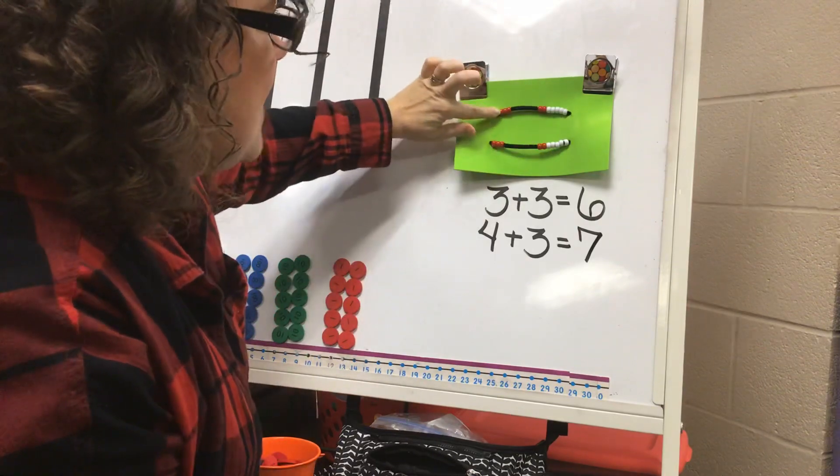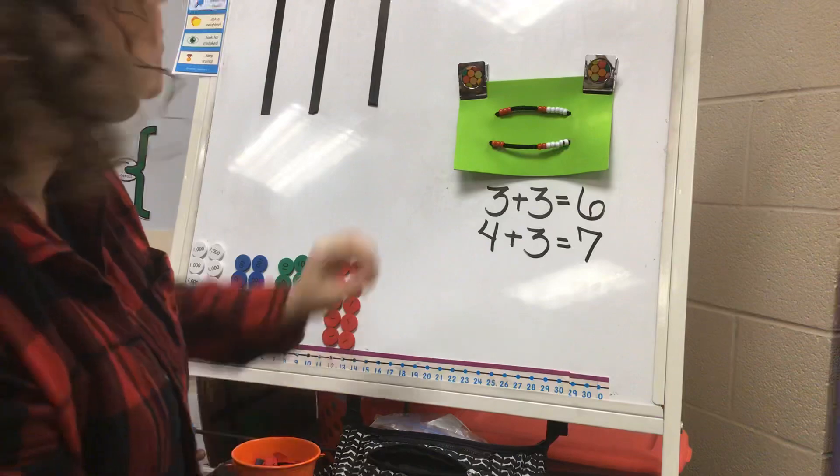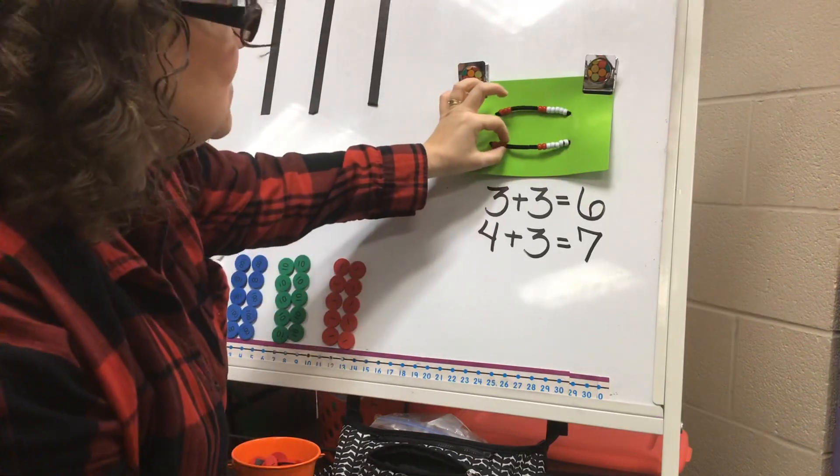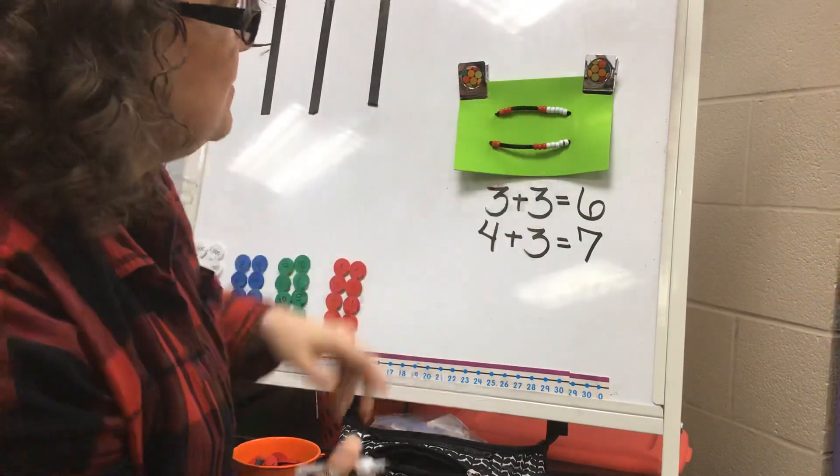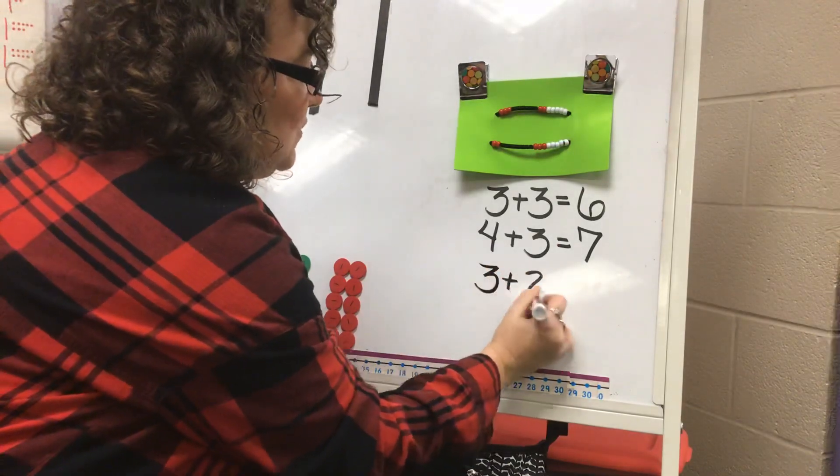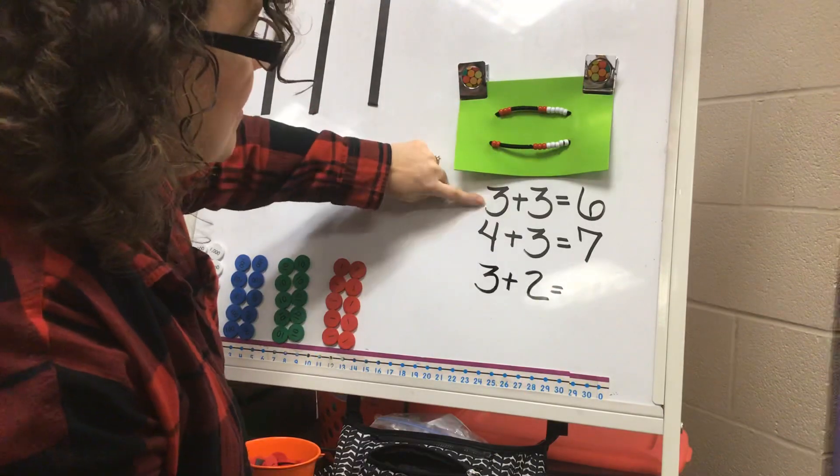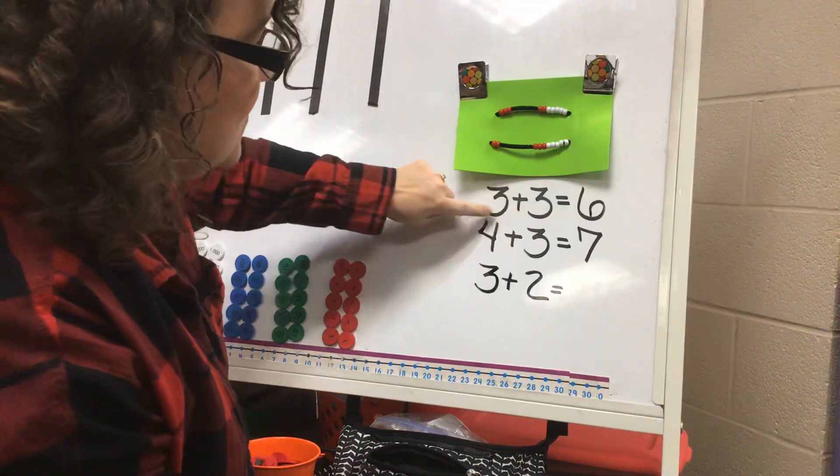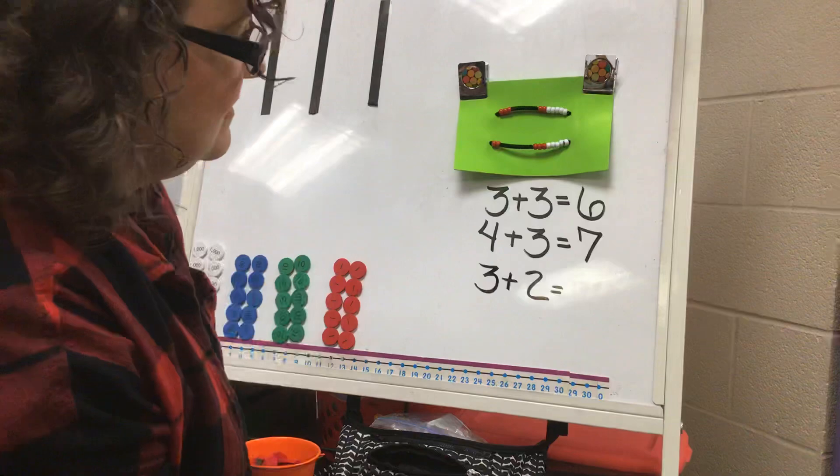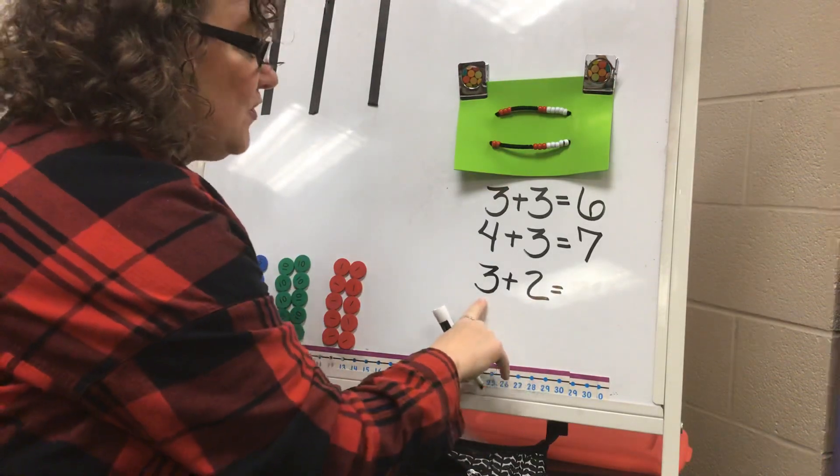Or I can go back to my doubles fact. I'm moving my bead over—I'm back at three plus three, and I can change it to one less. Watch what I'm gonna do. I moved my bead over and I made three plus two. Is three plus two gonna be one more or one less than three plus three? If you said one less, you are right. Three and two more makes five.